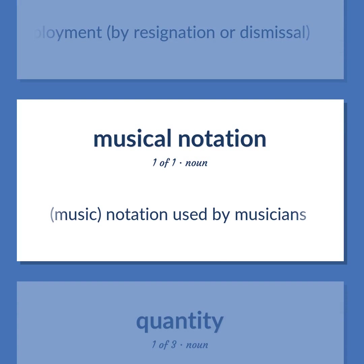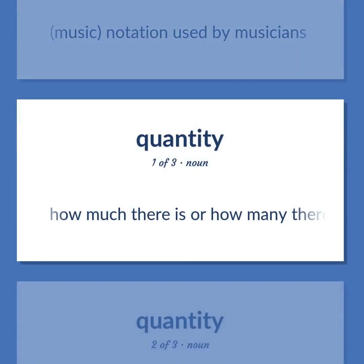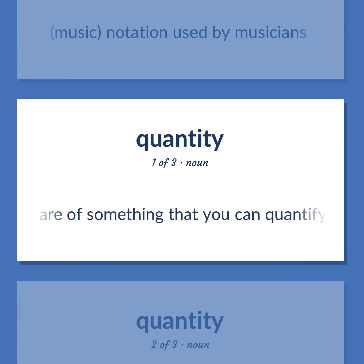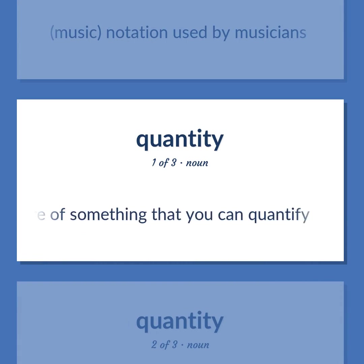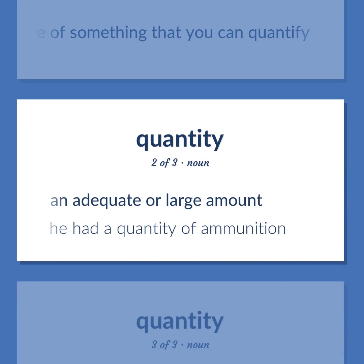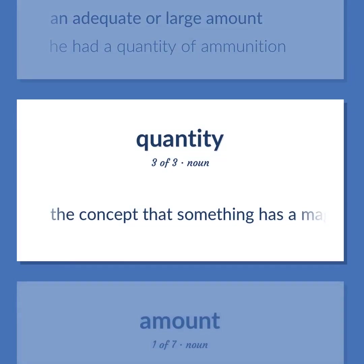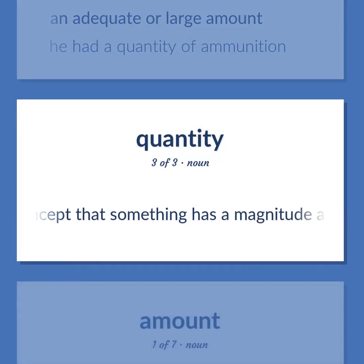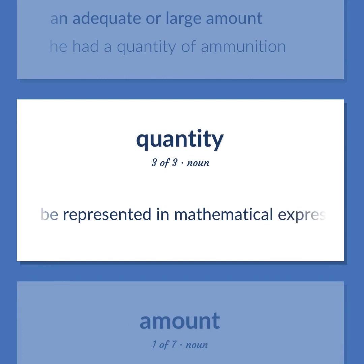Music: notation used by musicians. How much there is or how many there are of something that you can quantify. An adequate or large amount. He had a quantity of ammunition. The concept that something has a magnitude and can be represented in mathematical expressions by a constant or a variable.